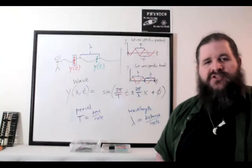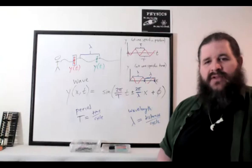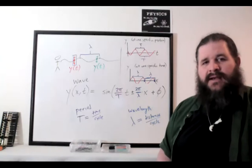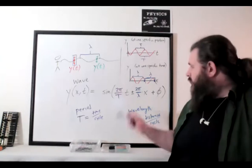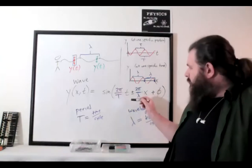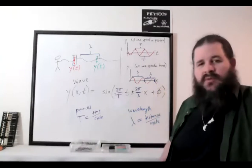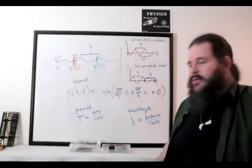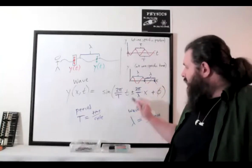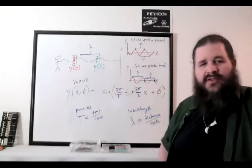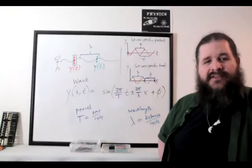We typically use a plus or minus between the position and time terms. The difference is which direction the wave is moving: plus represents the wave moving in the negative direction (to the left), and minus represents the wave moving in the positive direction (to the right).